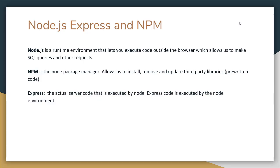In the last video, we set up a simple Express server with the React frontend. Now we'll cover exactly what Node, Express, and npm are. Node.js is a runtime environment that executes code outside the browser — important for making HTTP requests and SQL queries. npm is a package manager that allows us to install, update, and remove third-party libraries. Express is a server that's run by Node, so the Express code is executed in the Node environment.